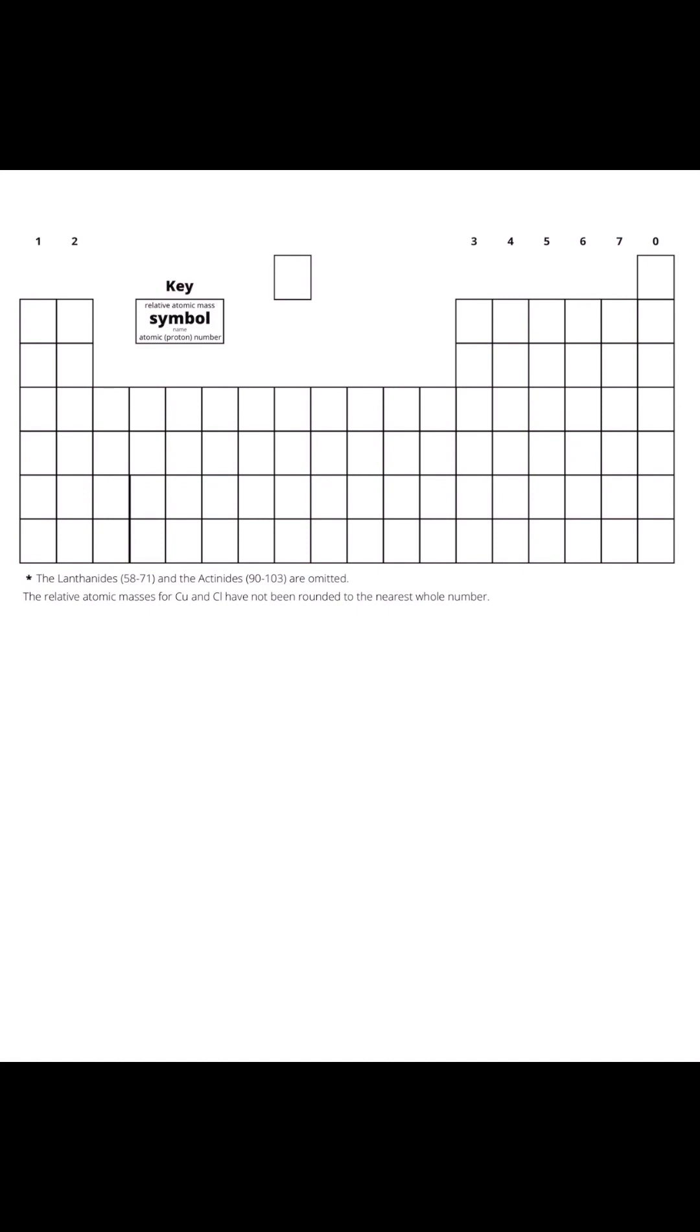Here's how you work out the formula of any ionic compound. If you have single elements, you can use the periodic table to work out the charge of each element. For anything in group one, the charge would be one plus. Group two would be two plus, group three would be three plus.